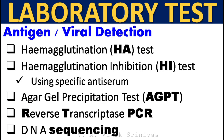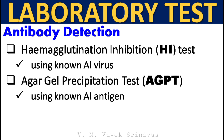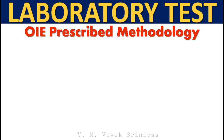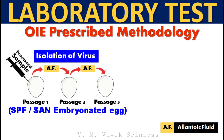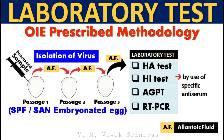Laboratory tests for diagnosis of this virus include: for antigen detection — hemagglutination test, hemagglutination inhibition test using influenza virus-specific antiserum, AGID gel precipitation test, reverse transcriptase PCR, and DNA sequencing. For antibody detection — hemagglutination inhibition test using known specific influenza virus, and AGID gel precipitation test. For identification, the OIE-prescribed methodology is followed: pooled processed samples are isolated in specific pathogen-free or specific antibody-negative embryonated chicken eggs, then allantoic fluids are tested by hemagglutination, hemagglutination inhibition using specific antiserum, AGID gel precipitation test, and further confirmed by reverse transcriptase PCR and DNA sequencing. Samples must be sent to HSADL, ICAR-IVRI, High Security Animal Disease Laboratory, at Bhopal.